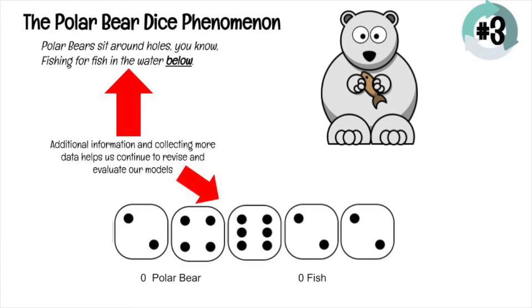Somehow, polar bear are represented by dice and fish are represented by dice, but they disappeared.